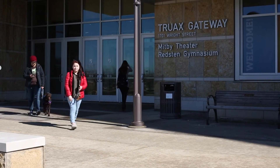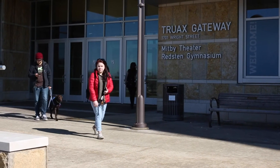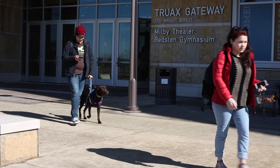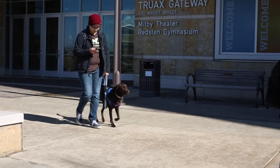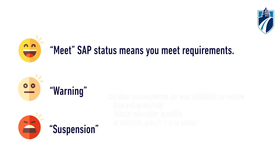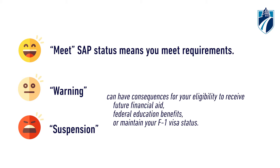After each semester, your grades, completion, and total credits are reviewed to calculate your SAP status. Meet SAP status means you meet requirements. Warning or suspension can have consequences for your eligibility to receive future financial aid, federal education benefits, or maintain your F-1 visa status.